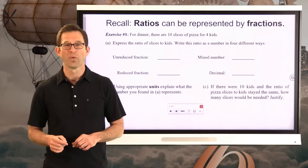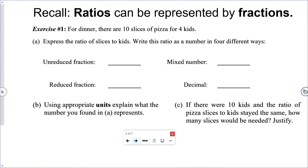Exercise number one. For dinner there are 10 slices of pizza for four kids. Letter A: express the ratio of slices to kids and write this ratio as a number in four different ways.